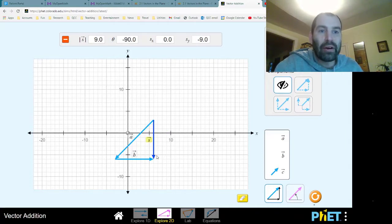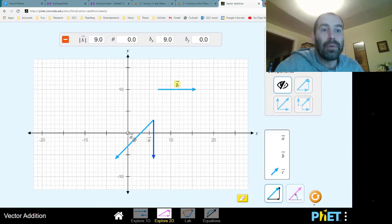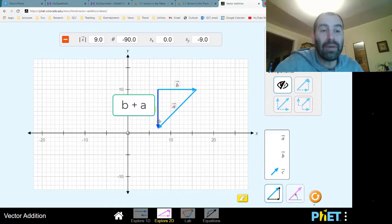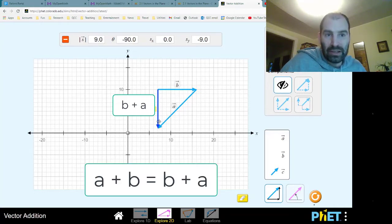Now here's a question. It doesn't matter which order we add them in. We know for numbers it doesn't matter. Numbers are commutative. a plus b is the same as b plus a. Does that hold true for vectors? Let's put a so that its tail is on the tip of b. Did that change the vector that joins the tail of b to the tip of a? No, it's the same vector. So we can see that vector addition is commutative just like number addition is.